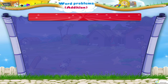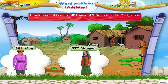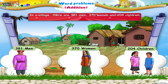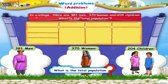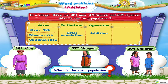Let us try another example. In a village, there are three hundred and eighty-one men, three hundred and seventy women, and two hundred and four children. What is the total population? What is given? What is to be found out? Total population. Which operation is to be performed? Addition.